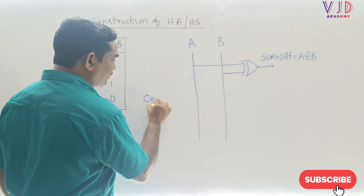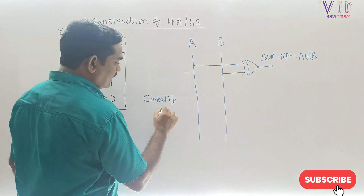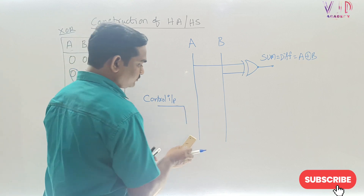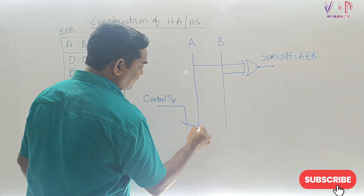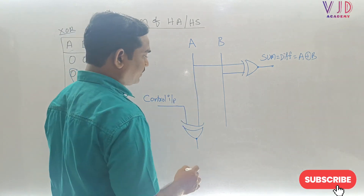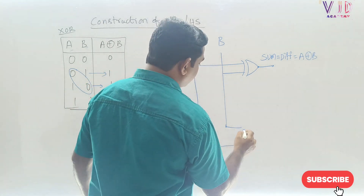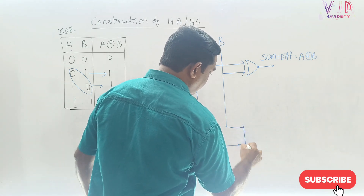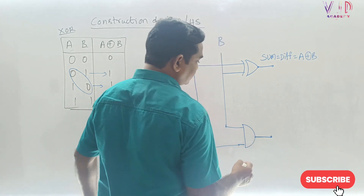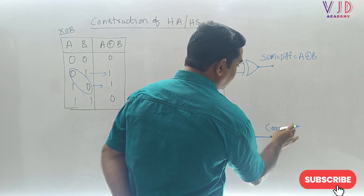The only difference is in the carry and borrow outputs. I will introduce one control input — call it the control input. I will take a connection from it and connect it to one XOR gate along with input A. The output of that XOR gate, combined with input B, will be connected to one AND gate. The output of this AND gate gives us carry or borrow.